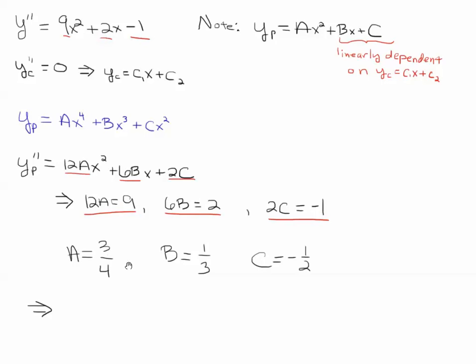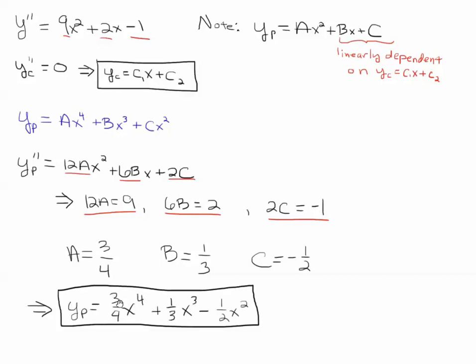We get a is 3 fourths, b is 1 third, c is minus 1 half. And then we just plug that in to this particular solution. And we get 3 fourths x to the fourth, plus 1 third x cubed, minus 1 half x squared.